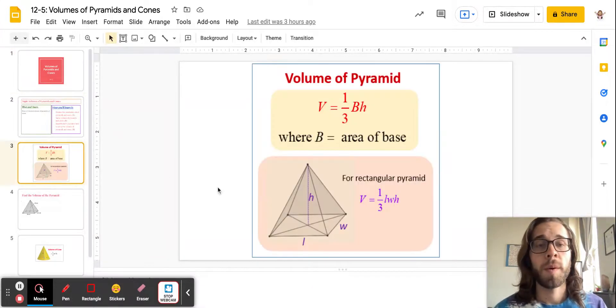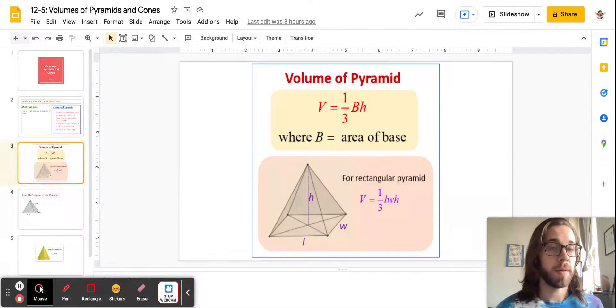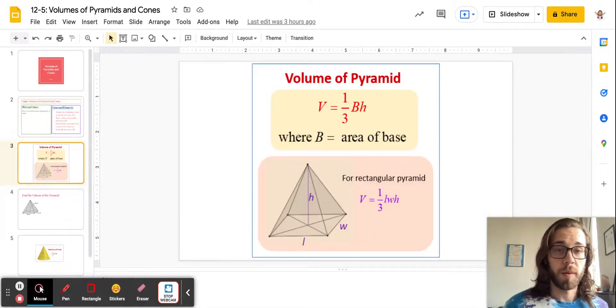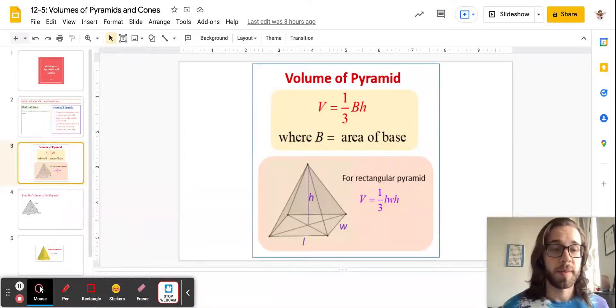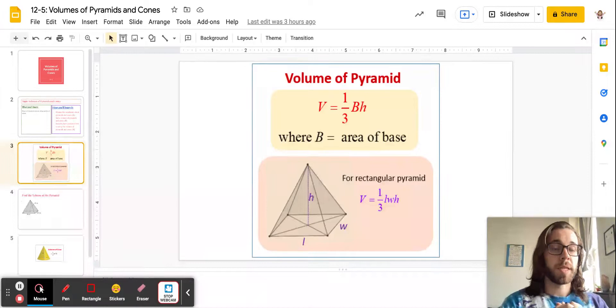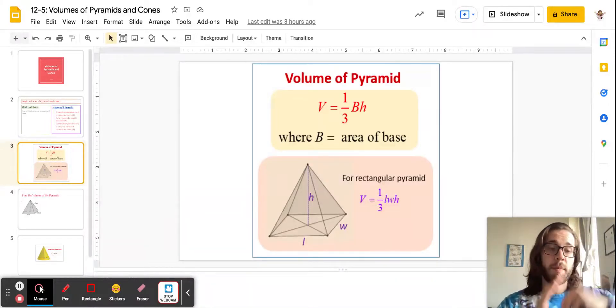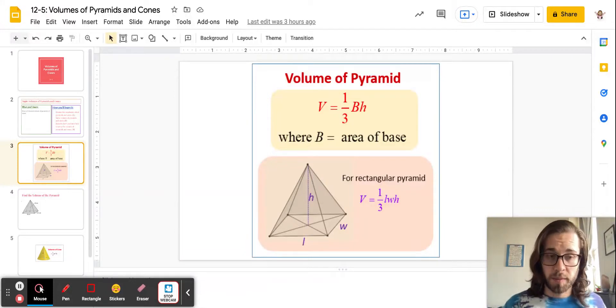Now, what we end up doing, we have to be careful when we move into cones and pyramids, because we kind of have them peaking at the apex, or like a vertex at the top. So we just have to be careful, because it's not going to end up being just the base times height anymore, because then you would end up with a prism.